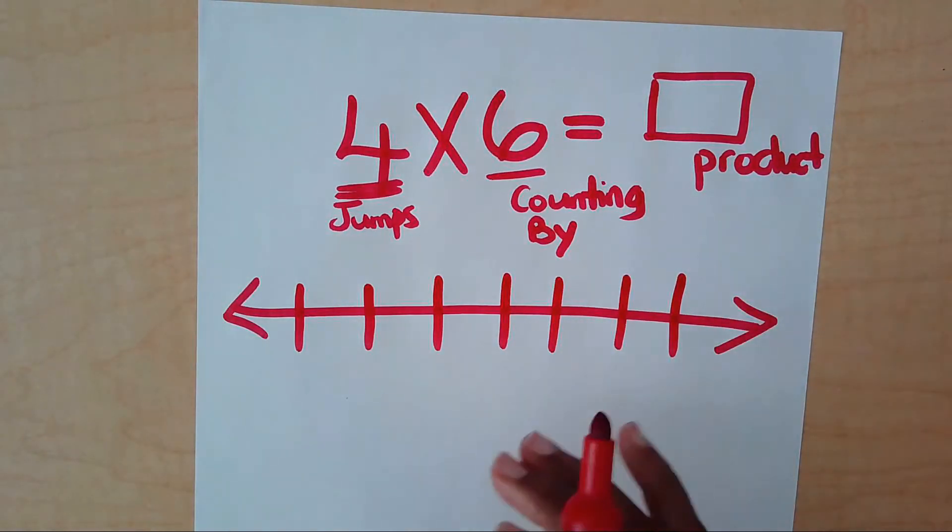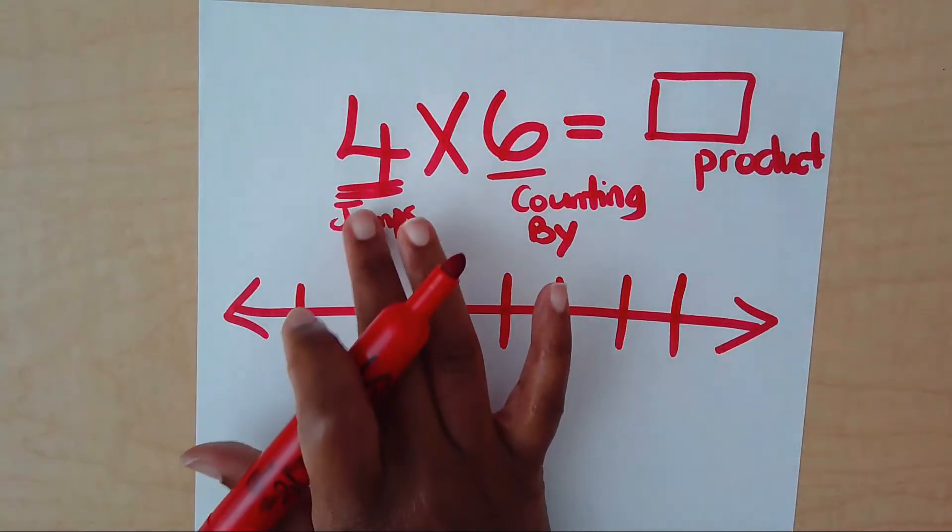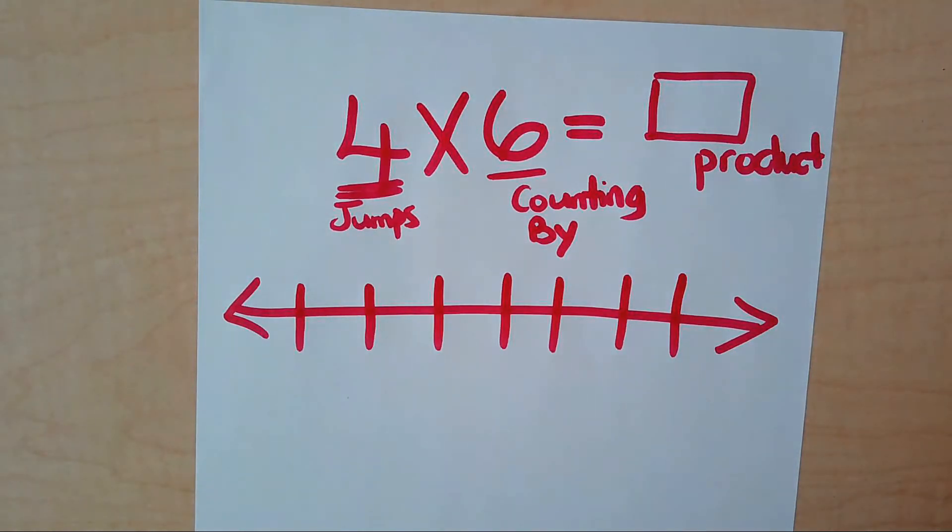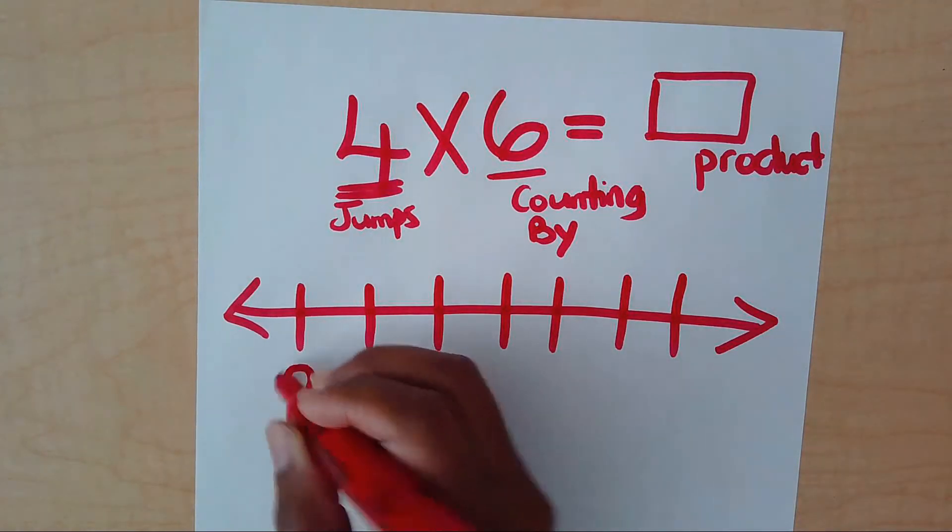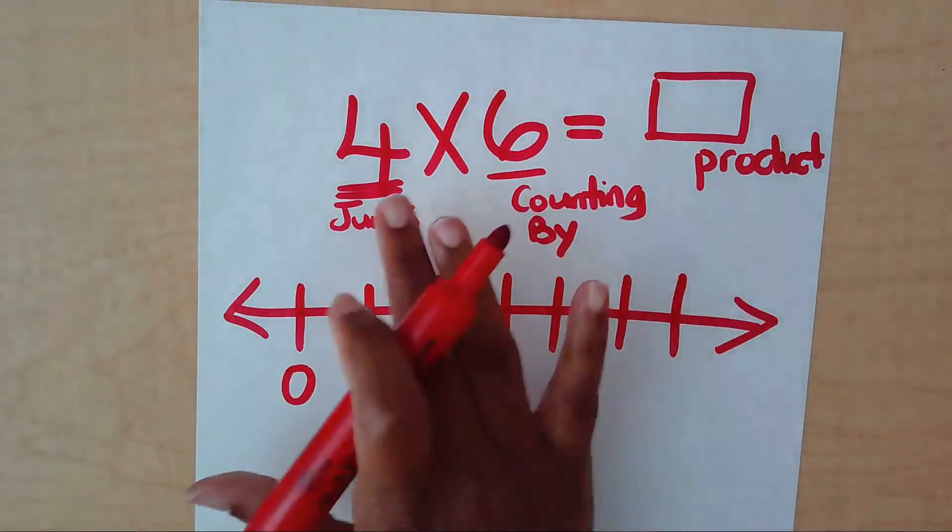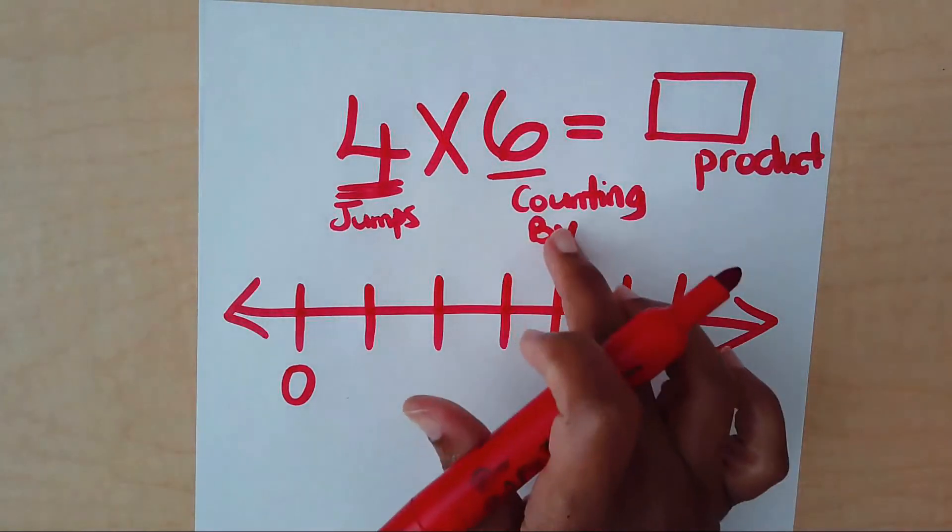So I'm going to put my lines down. How do I determine my lines? Well, I know that I'm only going to be jumping four times. So I don't need a lot of lines. For every number line, a number line must begin with a zero. So I'm going to put my zero down. Now, according to this problem here, I am counting by six.